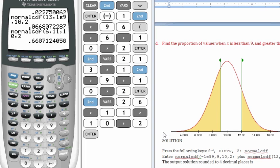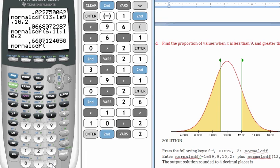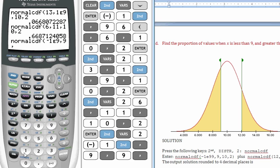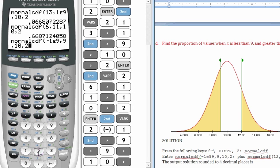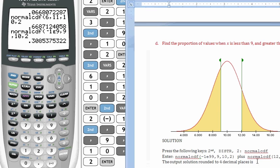Part D, we're looking to find the proportion of values that are below 9 and then also above 12. We'll have to do two different calculations here. I'm going to do a second, distribution, number 2, normal. And the first one's from negative infinity, so negative 1, second, e, 9. Negative infinity up to 9, with a mean of 10 and a standard deviation of 2. Enter. So approximately 30%. So I'll go ahead and record that, 0.3085.